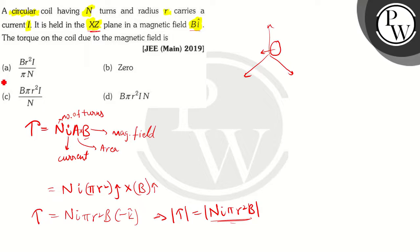So let's compare the options. Option A says B R square I by pi N - this is incorrect. Option B says zero - this is also incorrect. Option C says B pi R square I by N - this is incorrect.